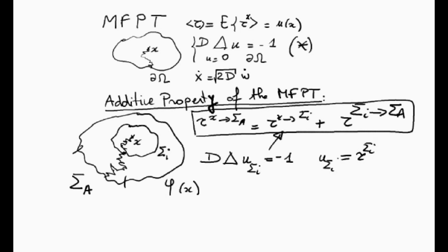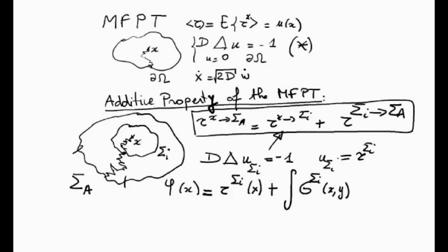The principle of the method is to introduce a function φ(x), which is τ_σᵢ(x) plus the integral over σᵢ of the Green's function — the distribution of exit points on σᵢ — denoted j_σᵢ(x, y), multiplied by the time to go from σᵢ to σₐ starting from point y, integrated dsy over σᵢ. I will define the function j in a moment.